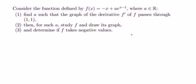So now I will show you the technique how to answer the question. Find a such that the graph of the derivative of the function f passes through the point (1,1).